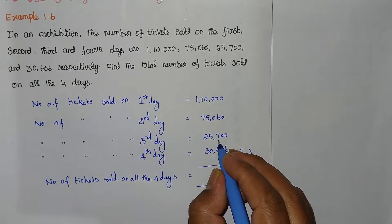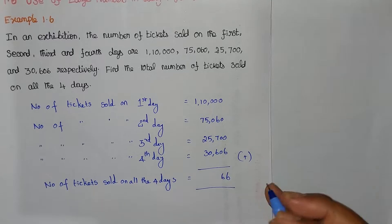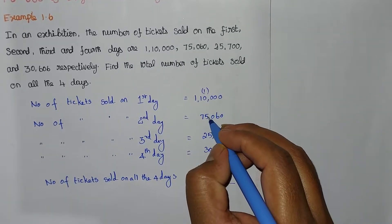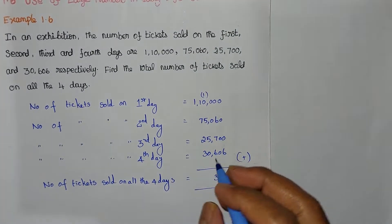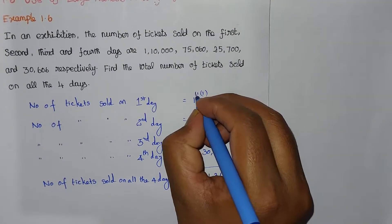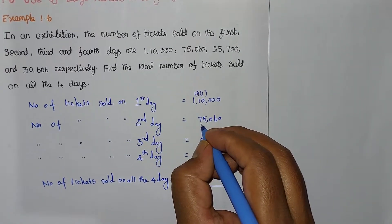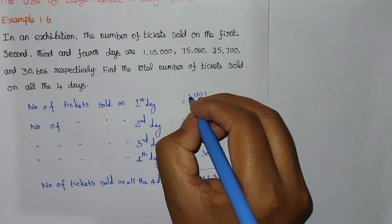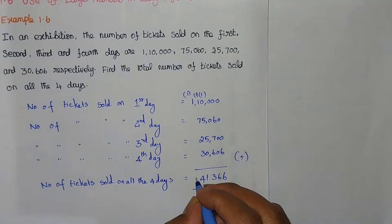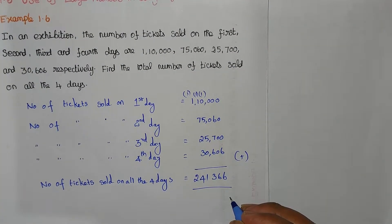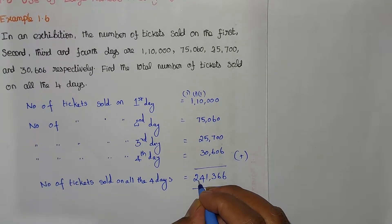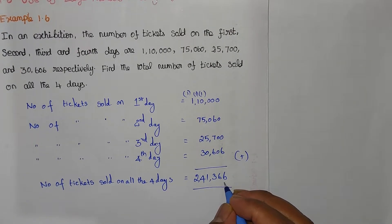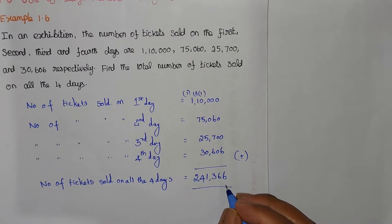Starting the addition: 6 plus 7 is 13, so write 3 and carry 1. 1 plus 5 is 6, plus 5 is 11, write 1 and carry 1. 1 plus 1 is 2, plus 7 is 9, plus 2 is 11, plus 3 is 14, write 4 and carry 1. 1 plus 1 is 2. So the answer is 2,41,366. That is the total number of tickets sold on all 4 days.